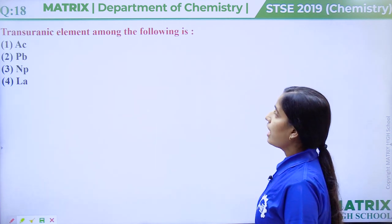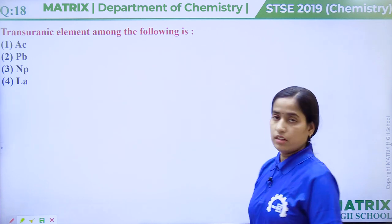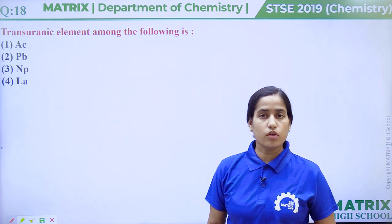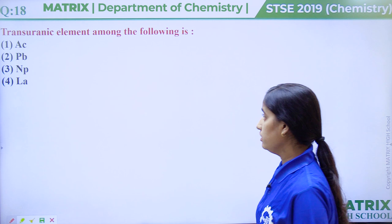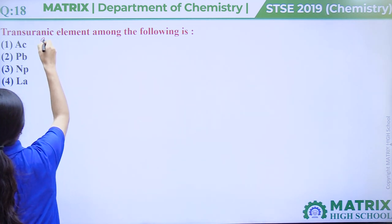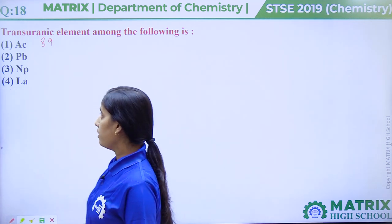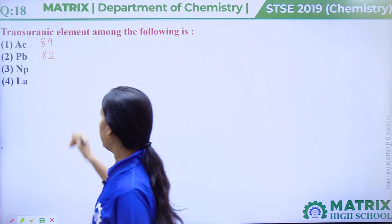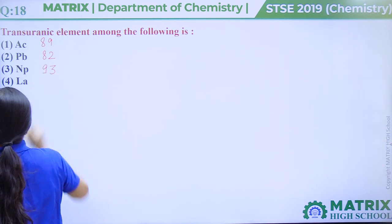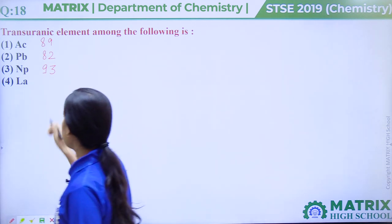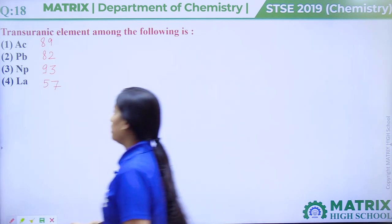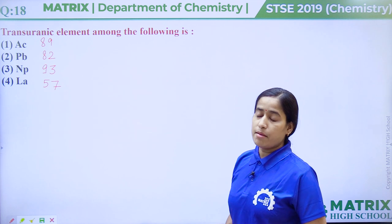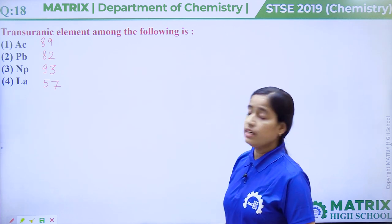Question number 18: Transuranic element among the following is. Generally, elements which have atomic number greater than 92 are called transuranic elements. Option 1, actinium — atomic number 89. Option 2, Pb (plumbum) — atomic number 82. Option 3, neptunium — atomic number 93. Option 4, lanthanum — atomic number 57. In option 3, the atomic number is greater than 92, so neptunium is an example of a transuranic element. Correct answer is option number 3.